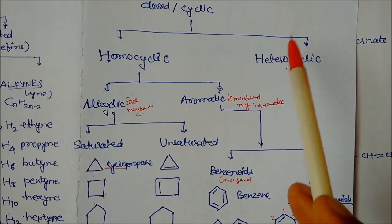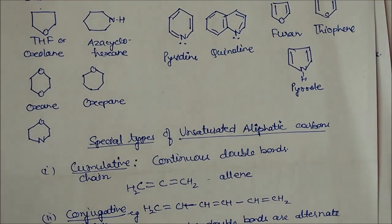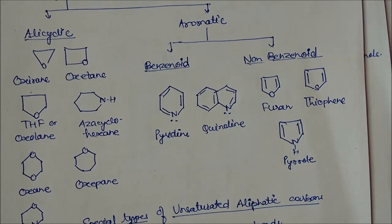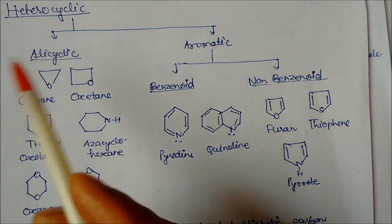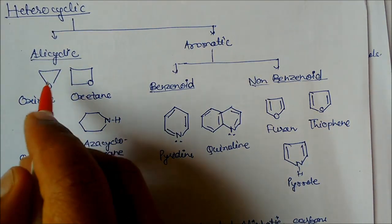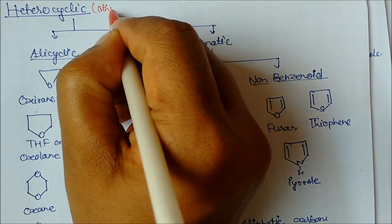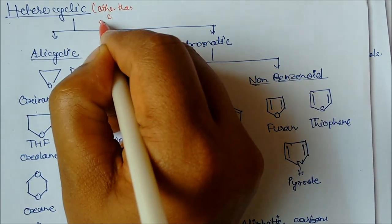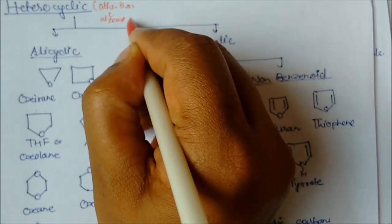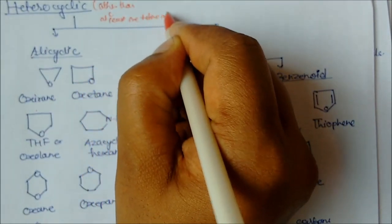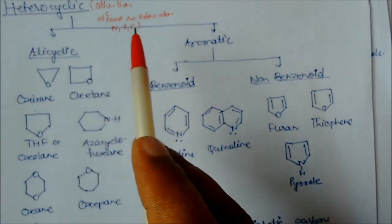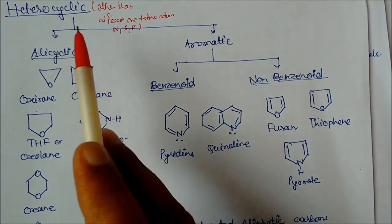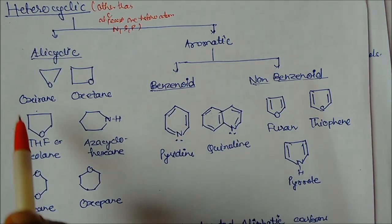Now we will see heterocyclic compounds. Heterocyclic is again divided into alicyclic and aromatic. Heterocyclic means the ring contains at least one hetero atom other than carbon — it can be nitrogen, sulfur, phosphorus, or any other atom. So if any atom like nitrogen, sulfur, or phosphorus is present in the ring, it is called a heterocyclic compound.